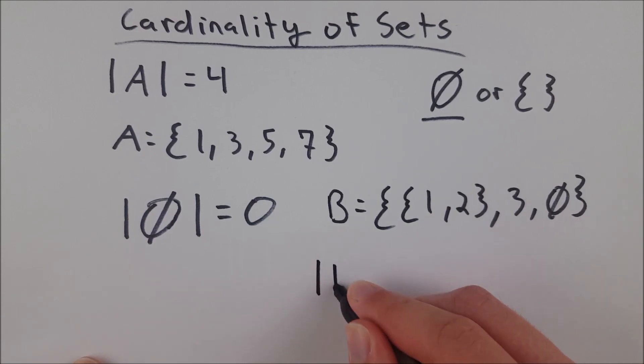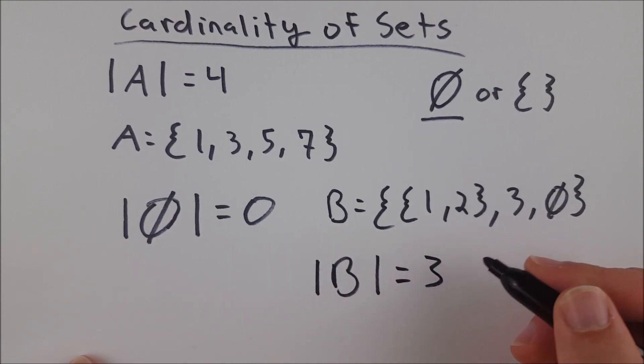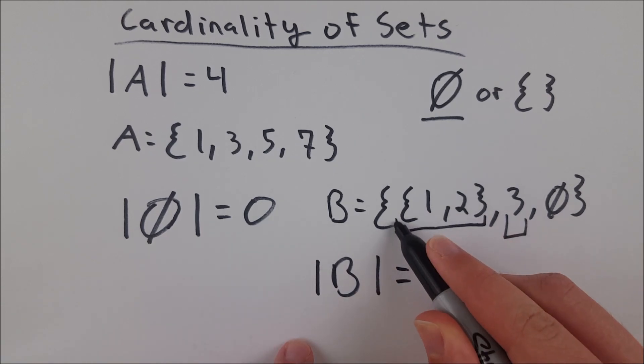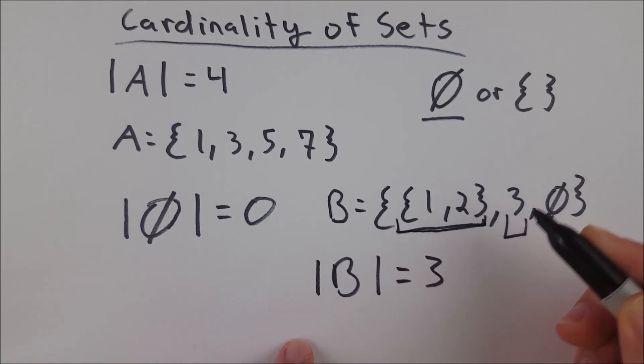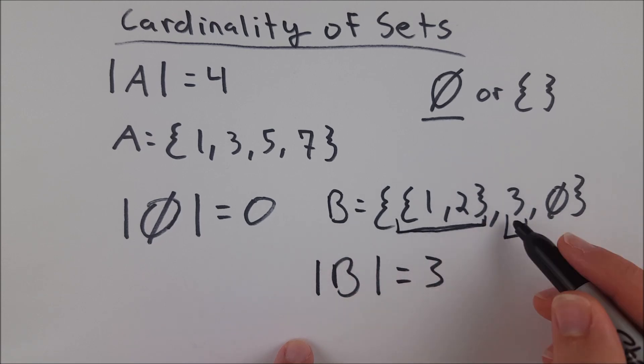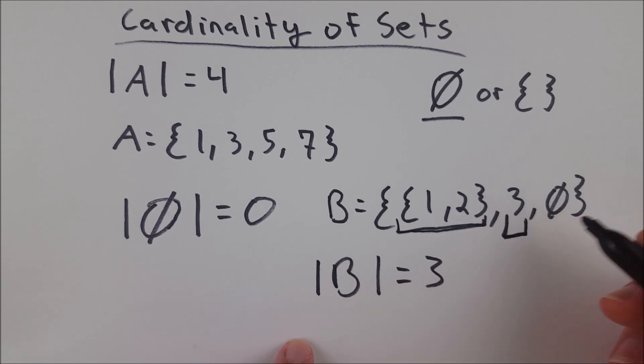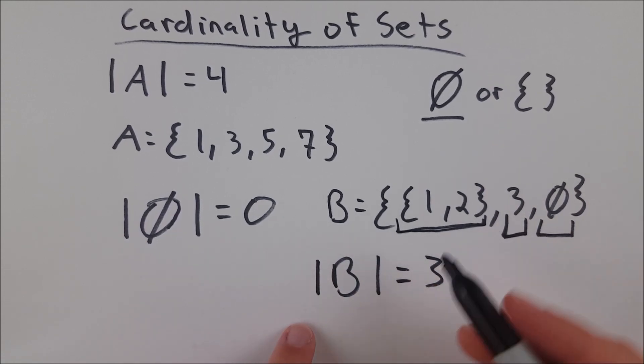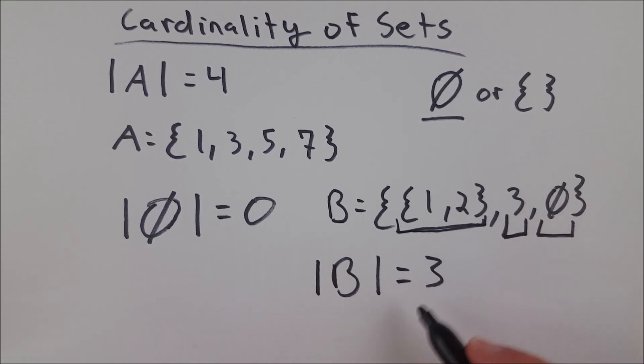Well, it's just 3. Cardinality of B is equal to 3. The only elements in B are this set here, the set containing 1, 2, which is an element of B, the number 3, which is an element of B, and the empty set, which is an element of B. So in this case, B has cardinality 3.